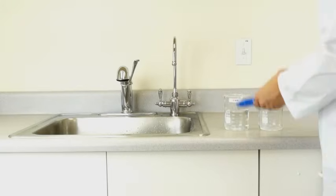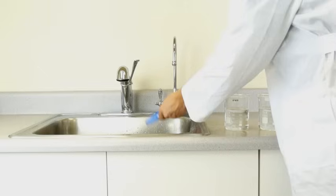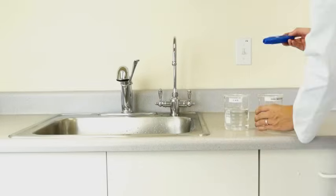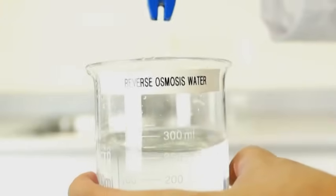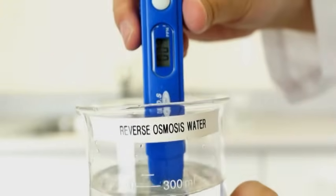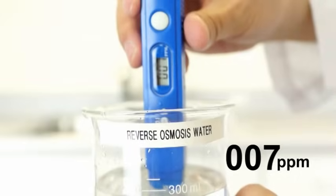Next, rinse your TDS meter with reverse osmosis water to maintain accuracy. Place the TDS meter two inches into the water until the meter displays a constant figure. The meter shows seven parts per million for the RO water.